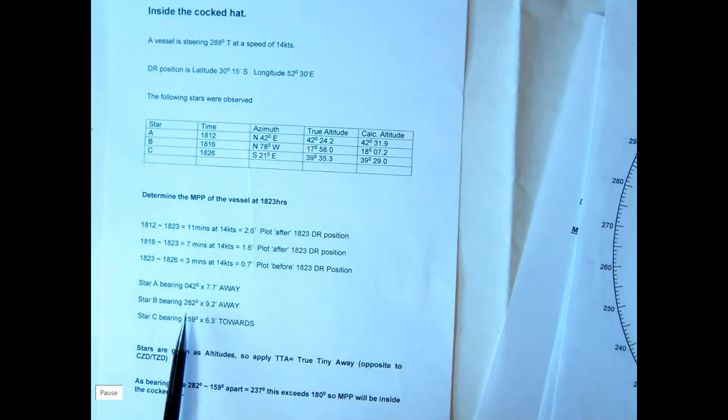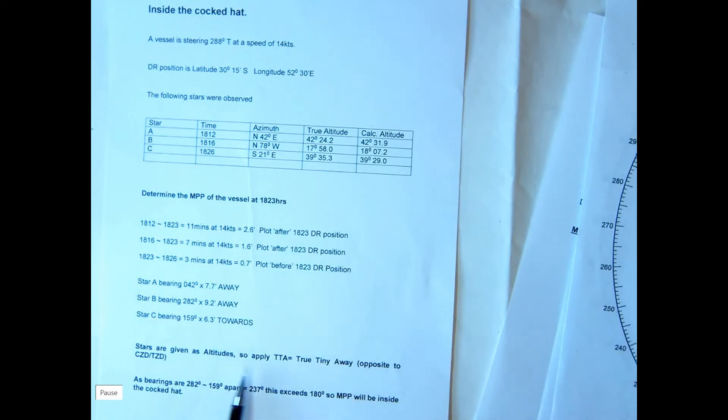Working out the bearings there and true, tiny away because it's altitudes rather than any distance and we get the three values to plot. And as it says here, as the bearings exceed 180 apart, the MPP will be inside the cocked hat.